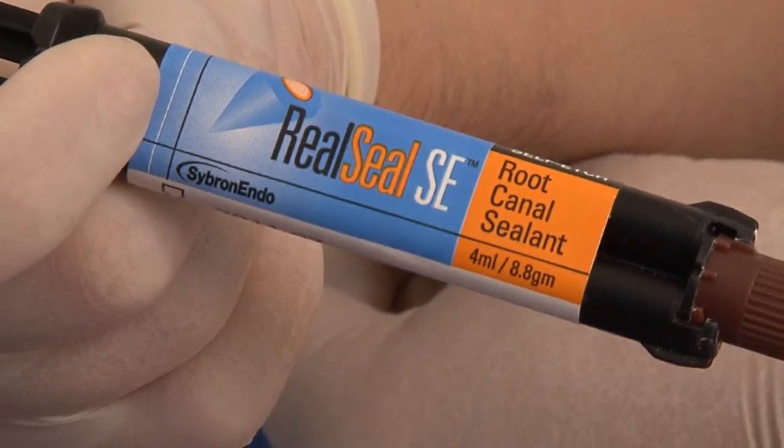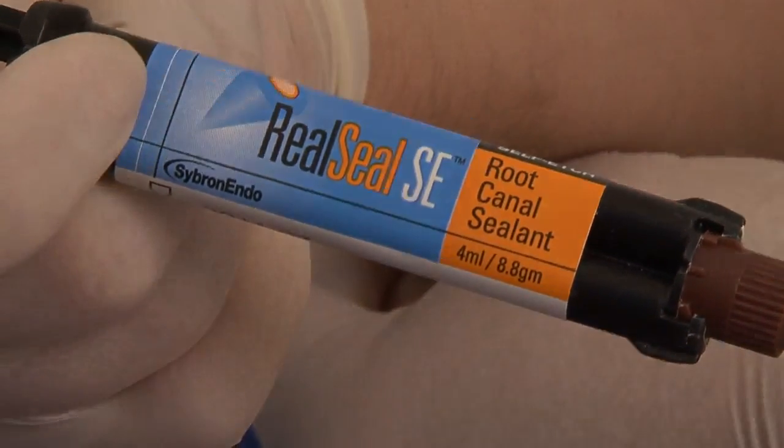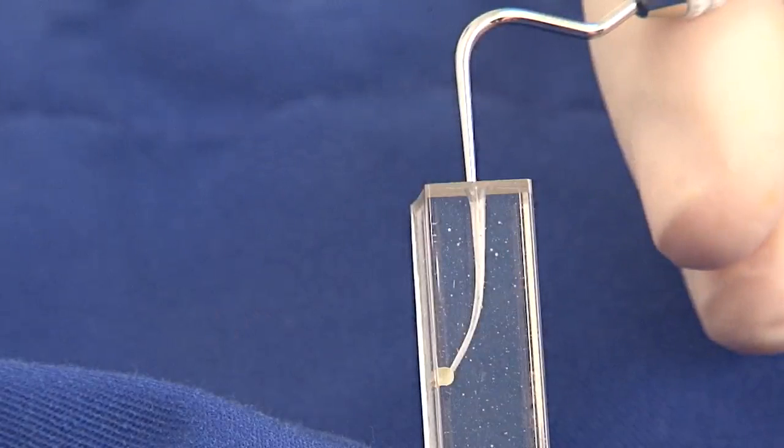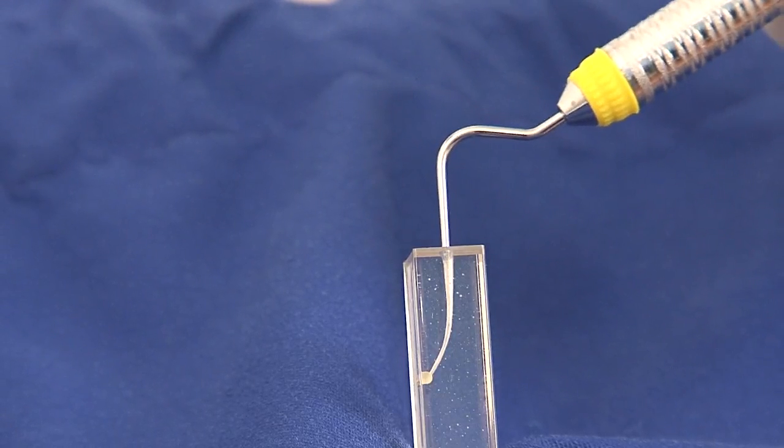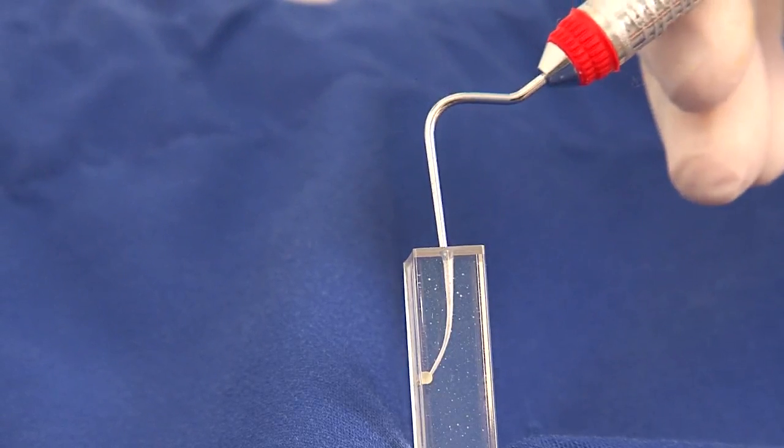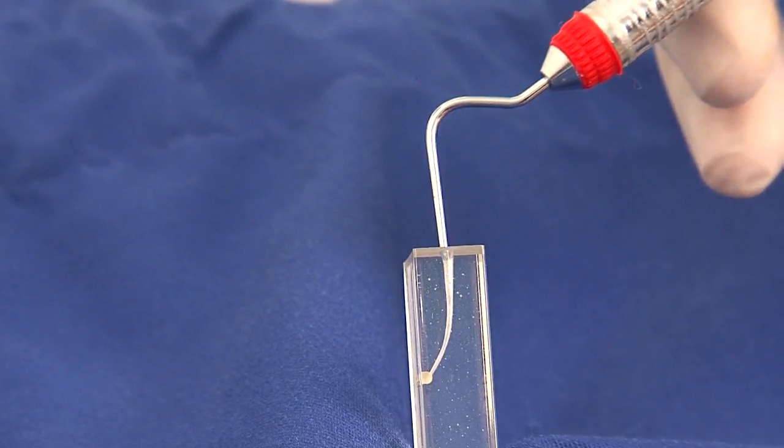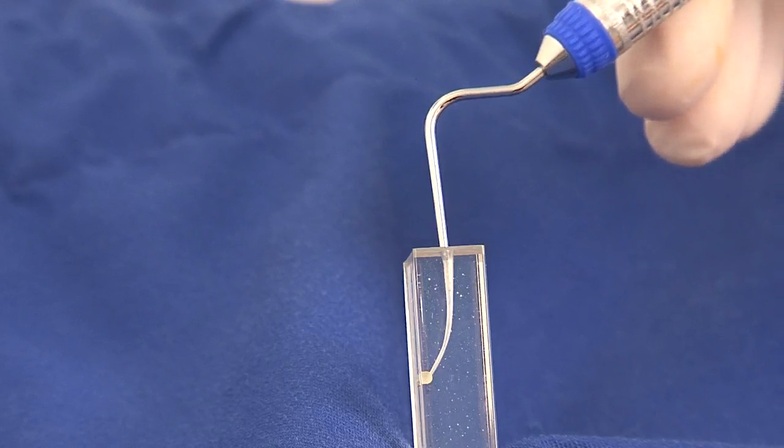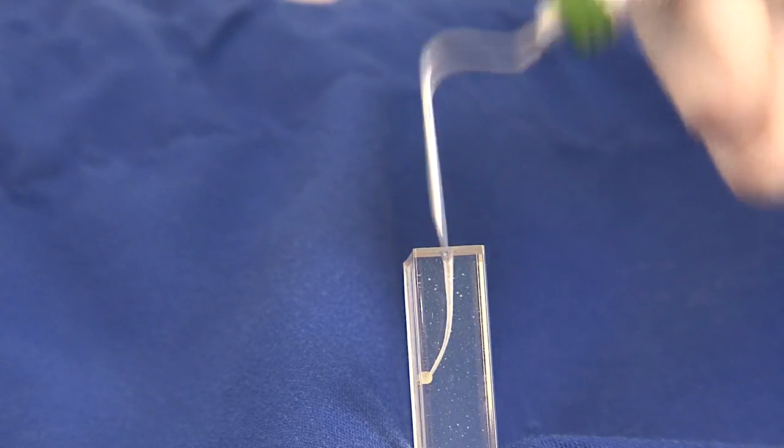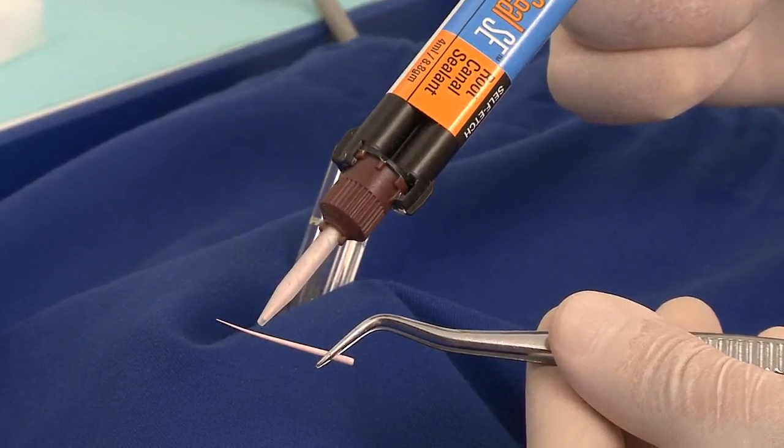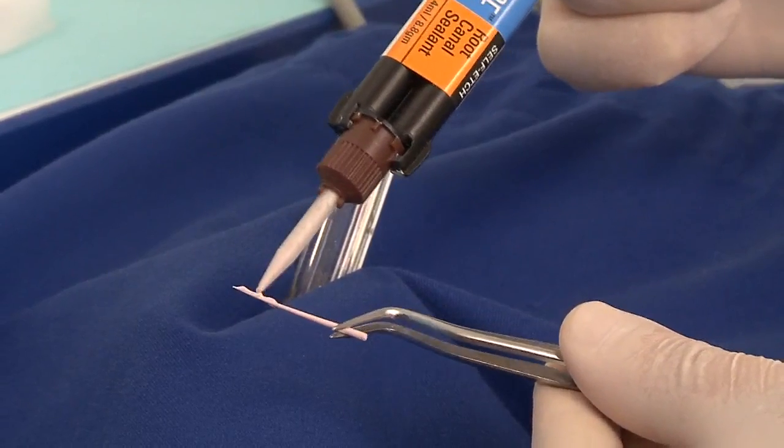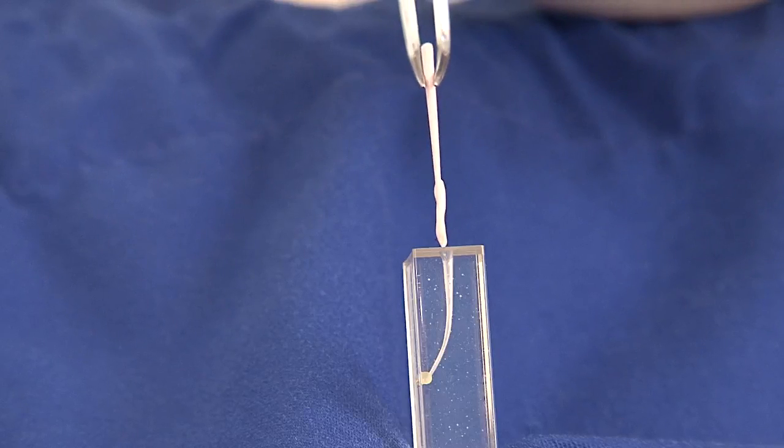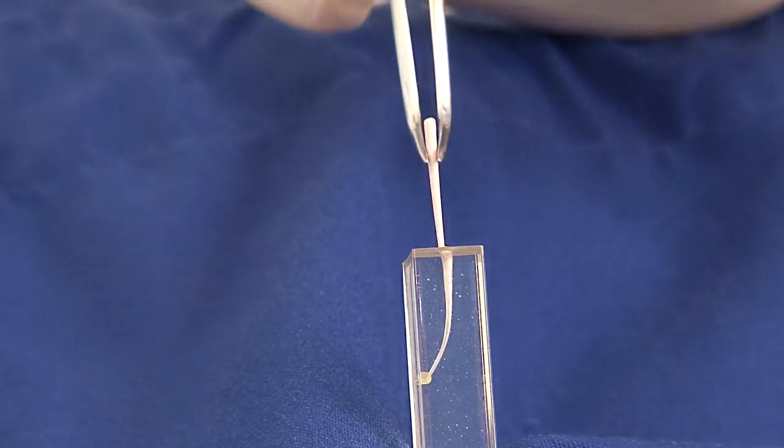RealSeal self-sealer is used. The choice of hand pluggers. We are going to try them on, five millimeters by five millimeters from the working length until the orifice. A bit of sealer on the master cone. And then we insert it slowly, gently, no brushing movement.